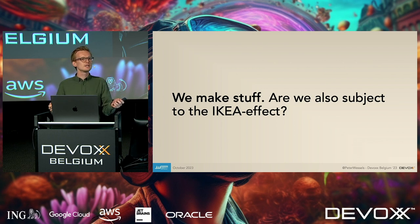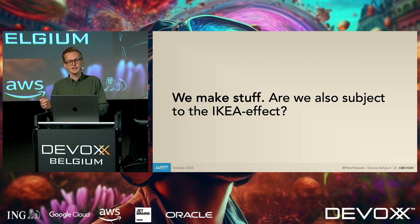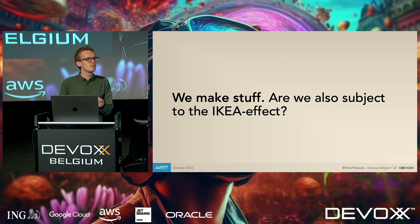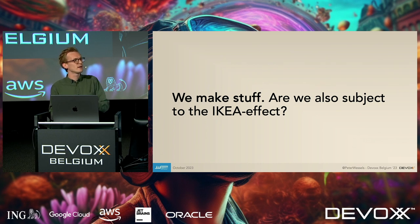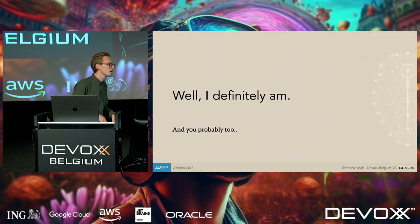As software creators, we also make stuff. We build products, configure platforms, design, and implement new features. All these activities result in some kind of product — whether it's a piece of code or a CI/CD pipeline. So are we also subject to the IKEA effect?